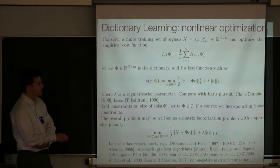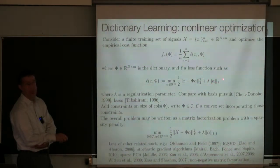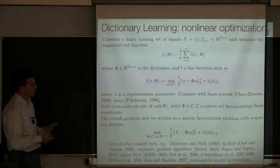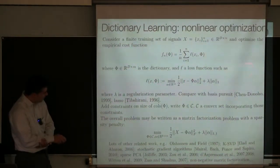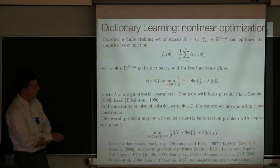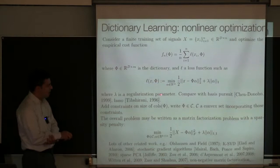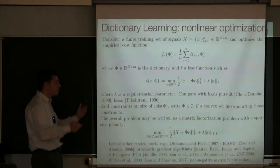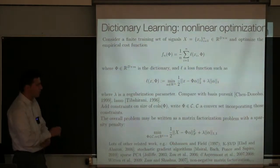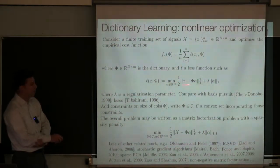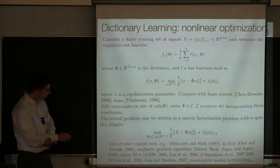It turns out that under suitable assumptions on the data and the dictionary, solving this L1 problem actually leads to a solution of the L0 problem. That was the beginning of what today is called compressed sensing or sparse representations. If you minimize this functional — minimizing over all choices of coefficients — this approximates x well and gives a sparse set of coefficients in the L1 sense. The problem is convex and you can solve it reasonably fast, though there's been a huge amount of work trying to solve it more and more efficiently over the past 10–15 years.